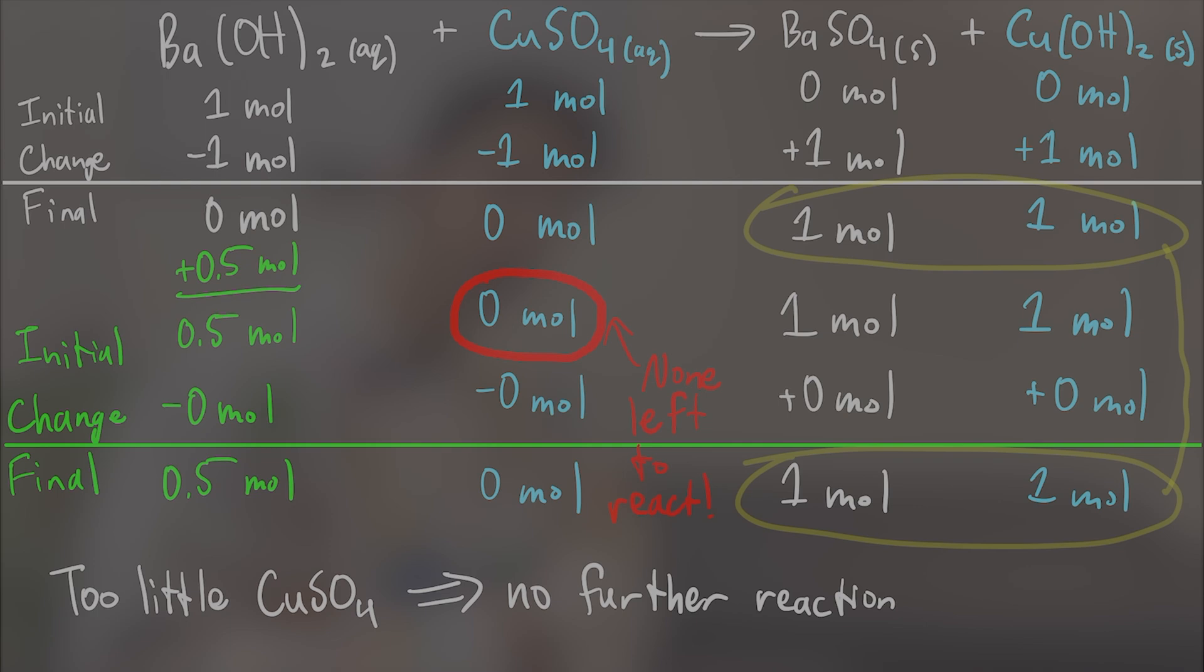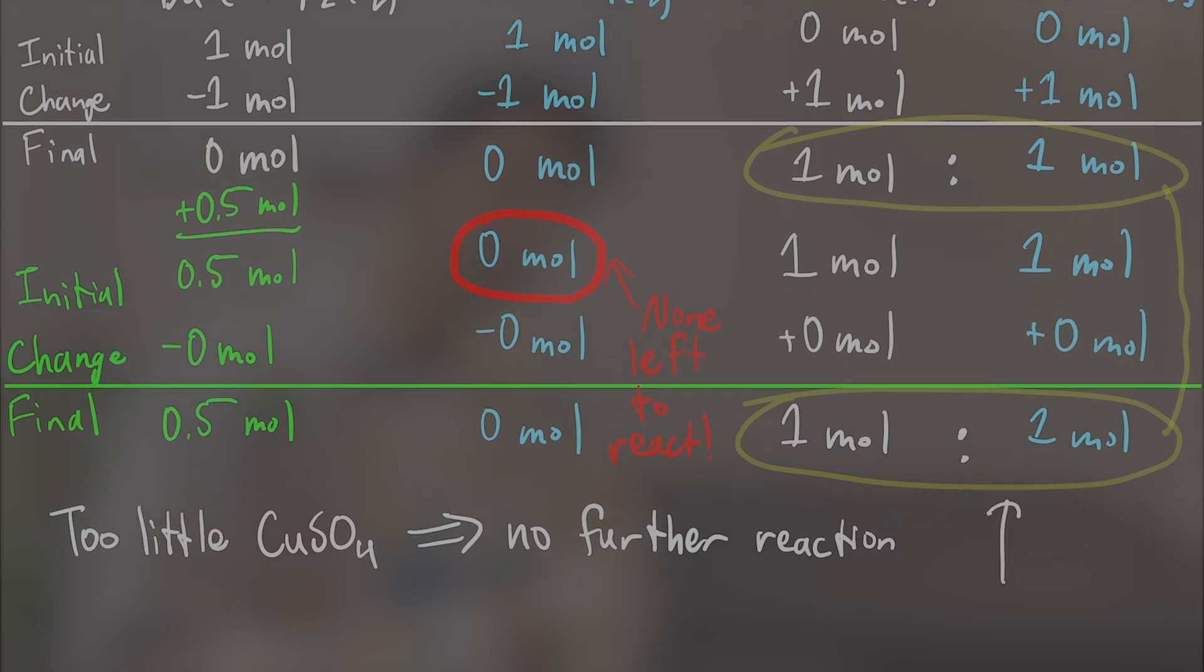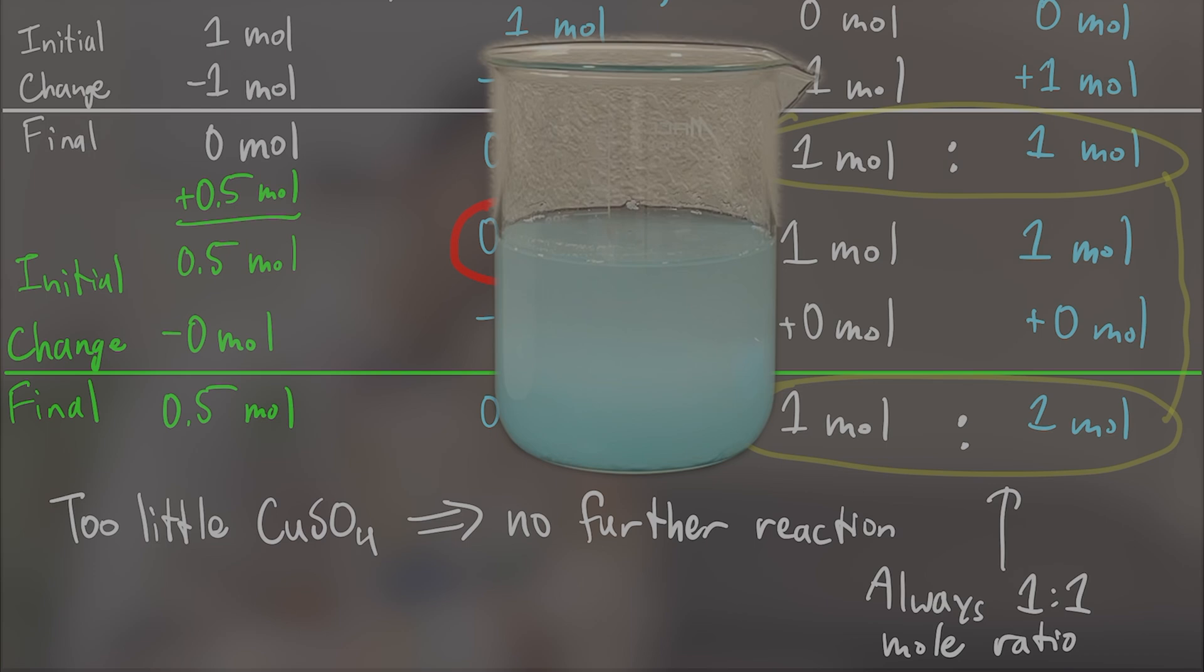The extra 0.5 moles of barium hydroxide will be dissolved in solution and won't contribute to the color of the solid. In other words, there will always be too little of one reactant, which will prevent any further precipitation from occurring. This means the mole ratio of blue copper hydroxide to white barium sulfate will always be one to one, meaning that the solid mixture will always have the same color. Never a darker or lighter shade blue than the shade you're seeing here. Interesting, right?